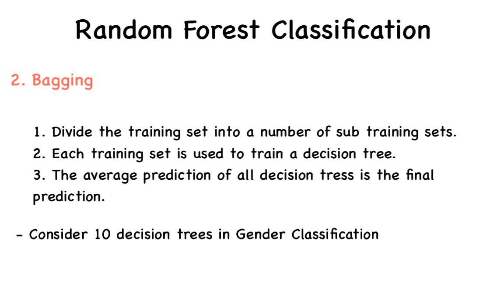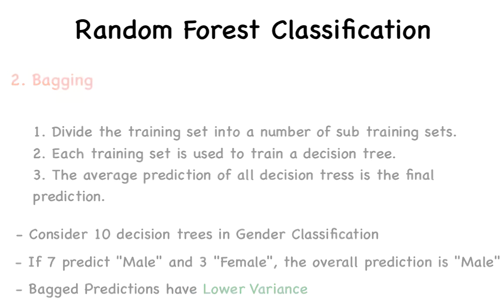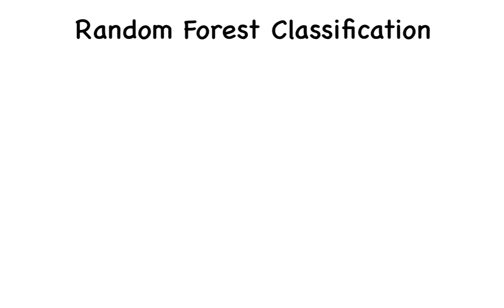The average prediction of all decision trees is the final prediction. For example, in the classification of a human as male or female, say that we have trained 10 decision trees. If 7 of them predict the output as male and the remaining 3 predicted as female, then the human sample is labeled male. Majority rules. Bagging reduces the output variance of the final prediction, despite the fact that the individual models themselves have high variance.